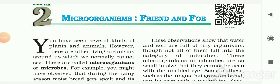Hello students. Today we are going to study about chapter 2 of class 8 science. The chapter name is microorganisms, friend and foe. How these microorganisms are helpful to us and what are the disadvantages of these microorganisms. So let's start with the chapter.